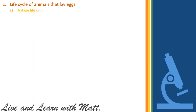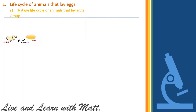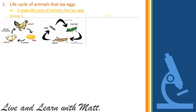One: the three-stage life circle of animals that lay eggs. Group one — after hatching from their eggs, the young look the same as their parents. Examples: chickens, geckos, snakes, fish, grasshoppers, and cockroaches.